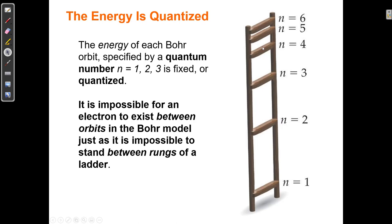As it slows down a little bit more it drops to this level, and then this level. But if it slows down any further, it can't drop any further — this is the bottom of the ladder. The bottom rung is as close to the nucleus as the electron can possibly get. It can only climb on these rungs, and when it gets to the bottom, it can't get any closer. So it can't crash into the nucleus.